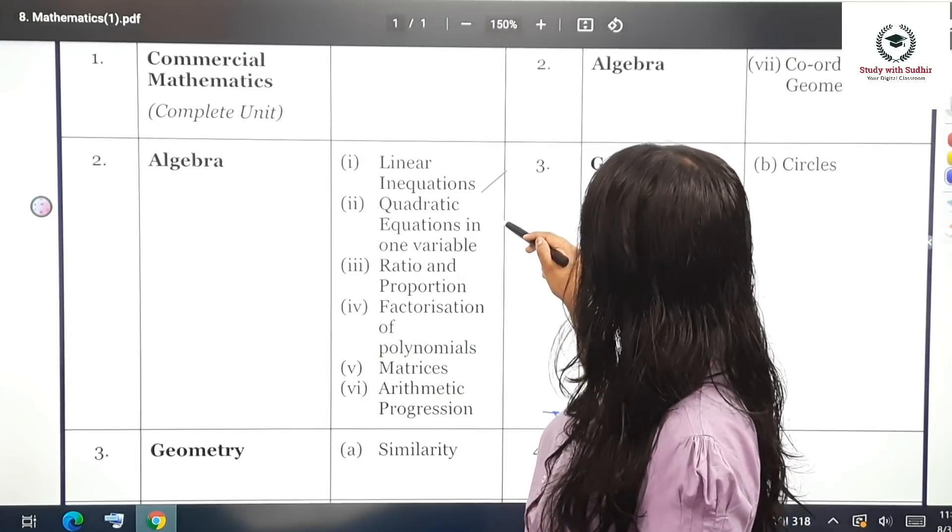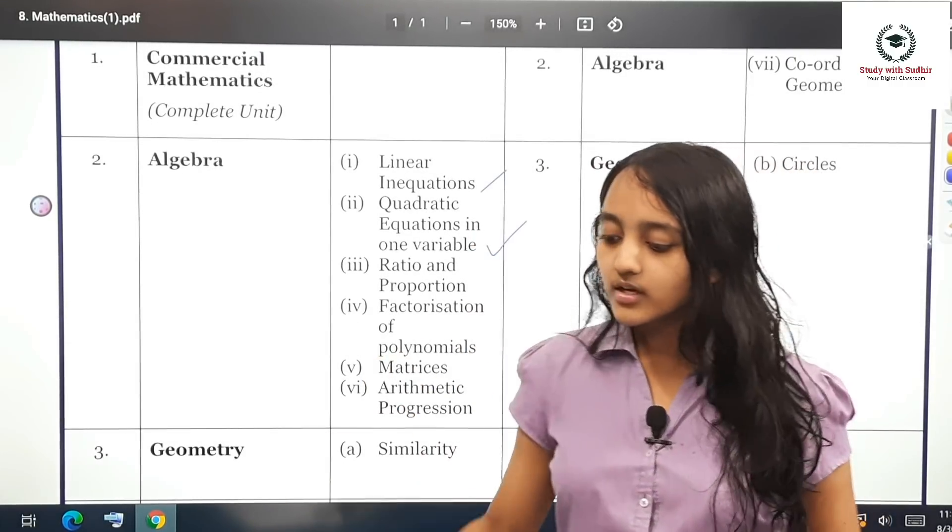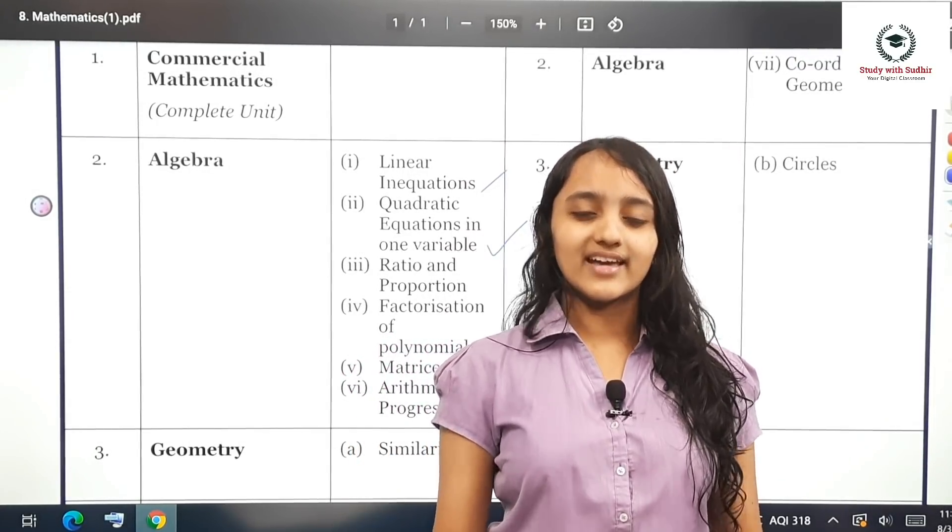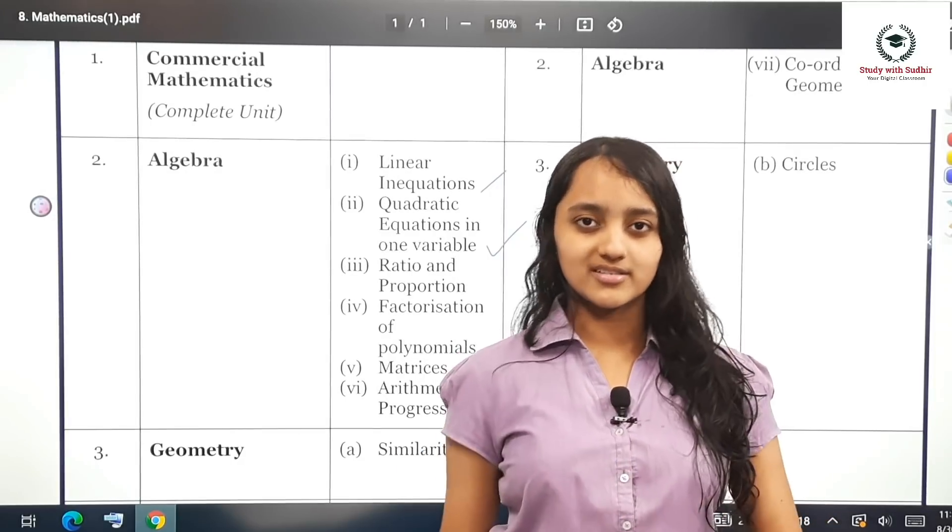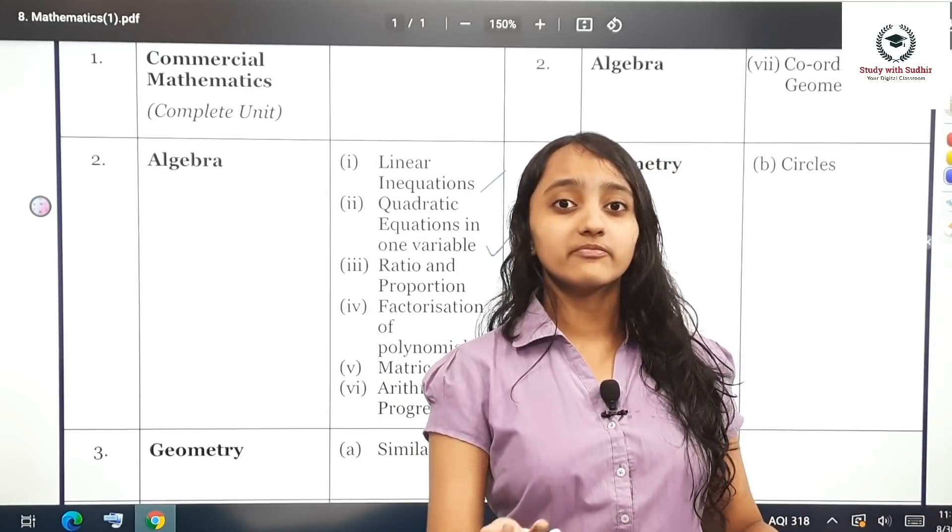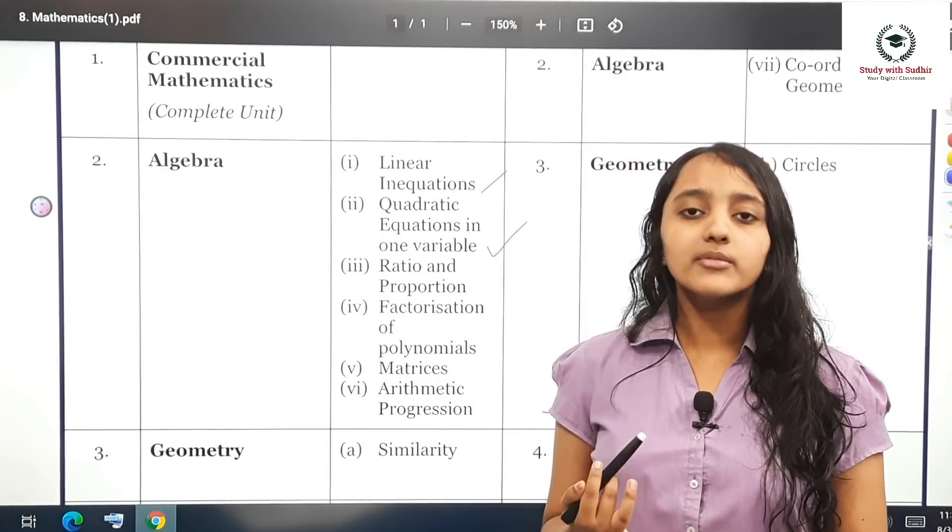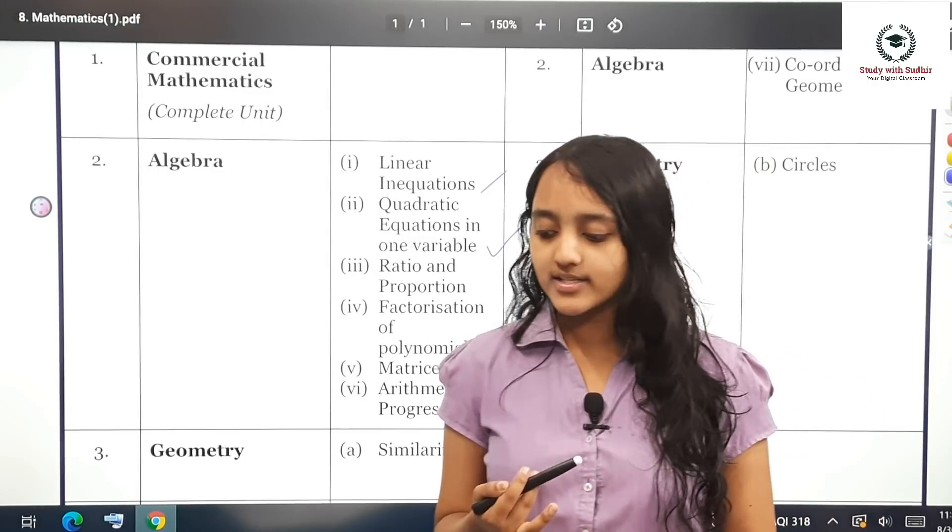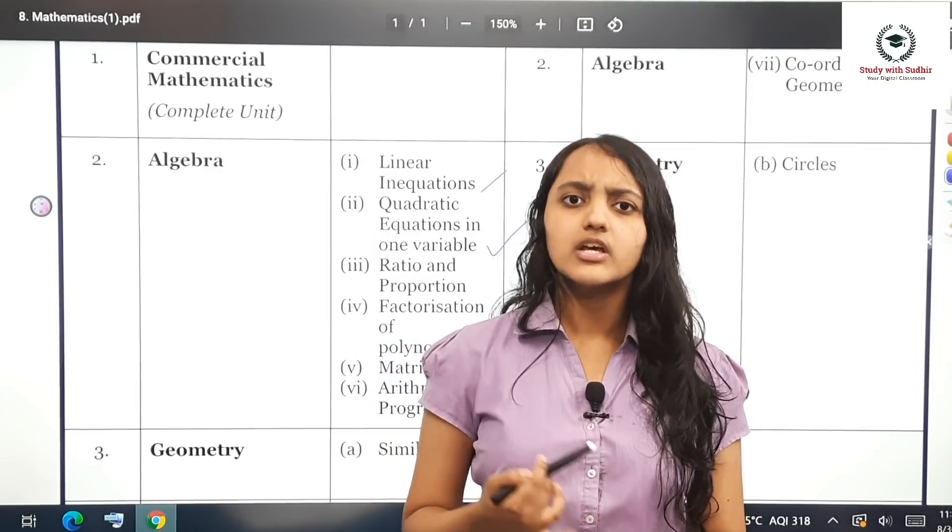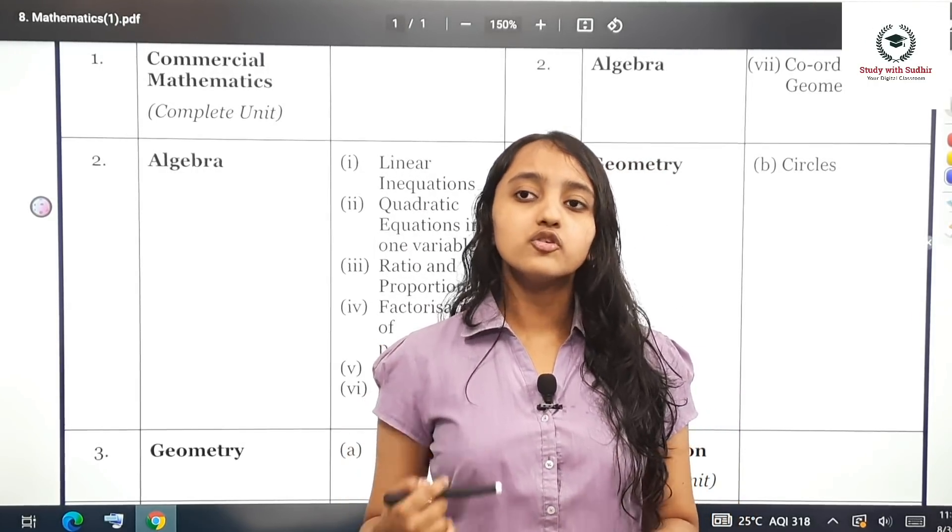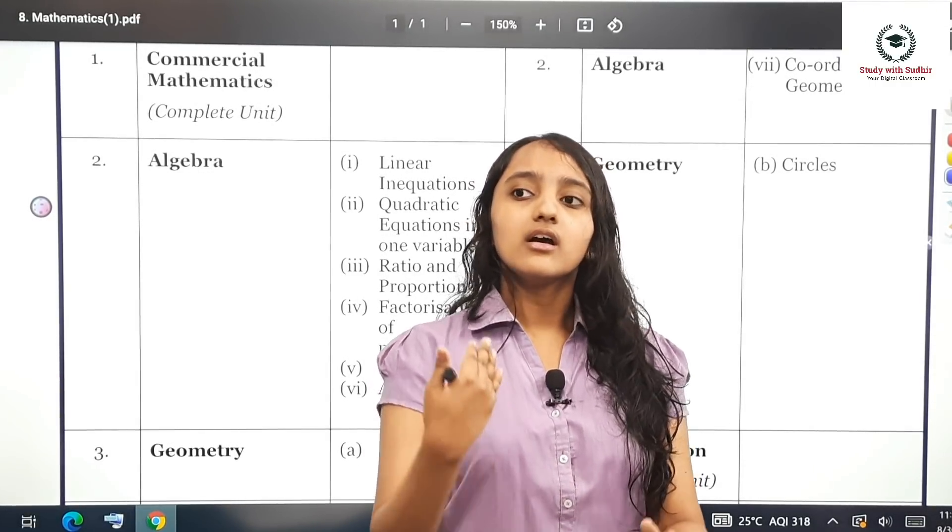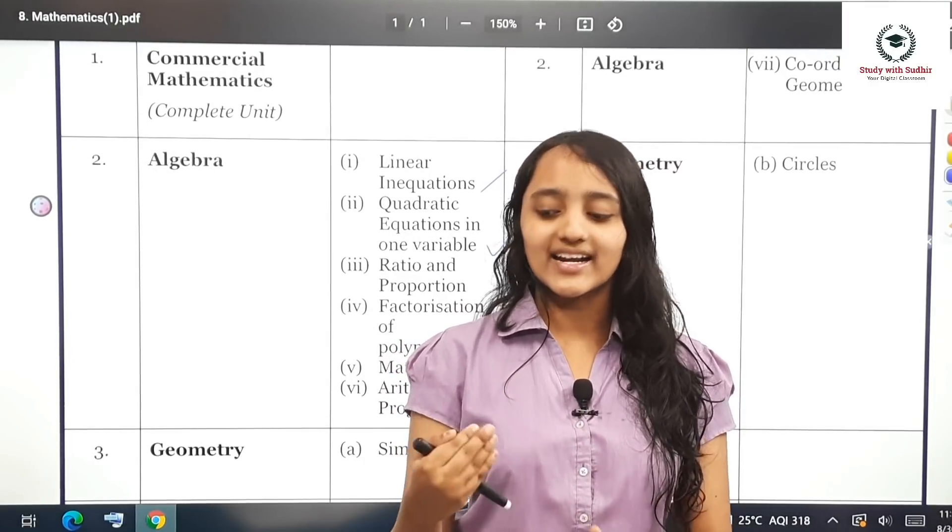The next chapter is quadratic equations in one variable. The most important questions asked are what type of roots are there in that particular equation: real, distinct, imaginary, etc. There is factorization and the formula method. One thing you should keep in mind, which was also asked in the specimen paper, was significant figures. We will be telling you how exactly it is to be done.